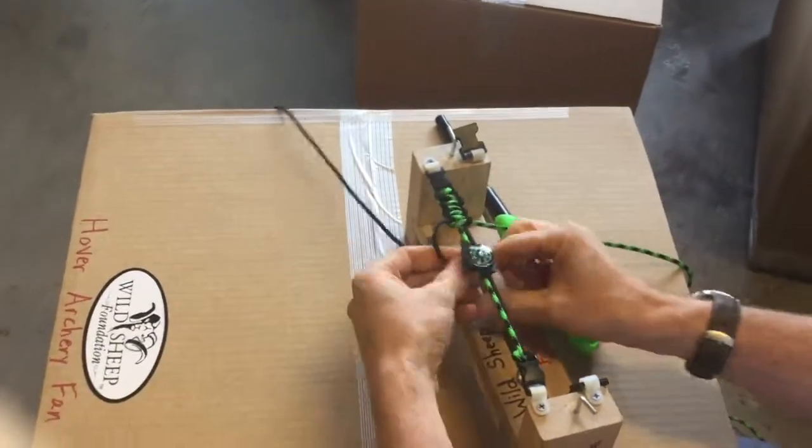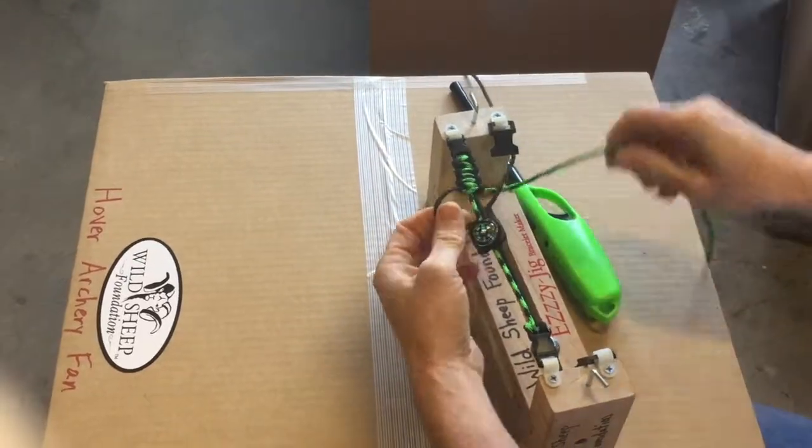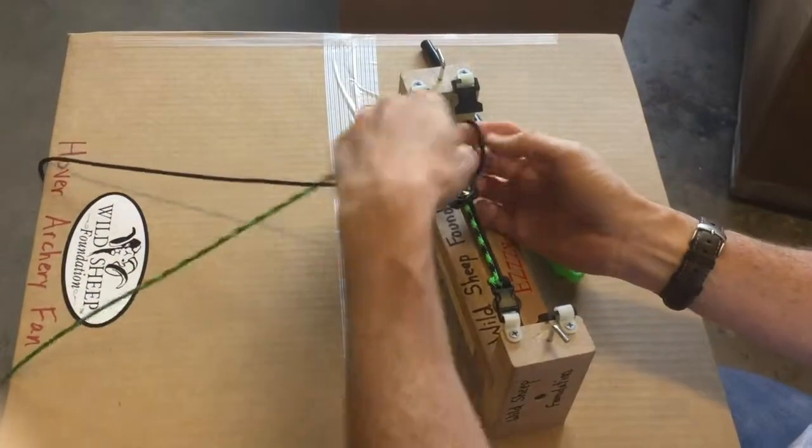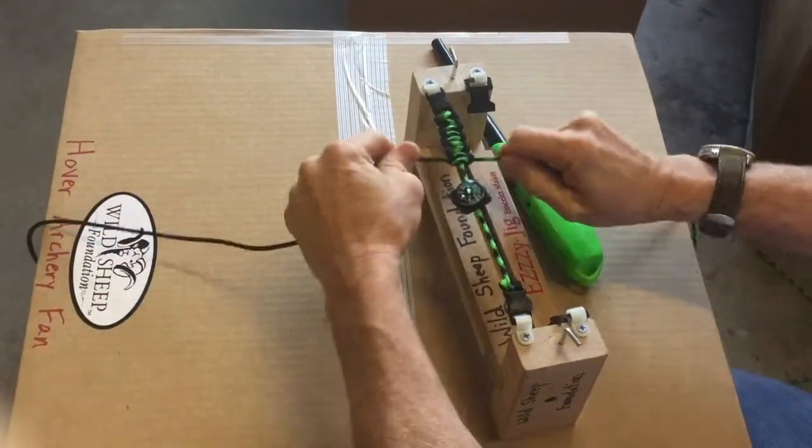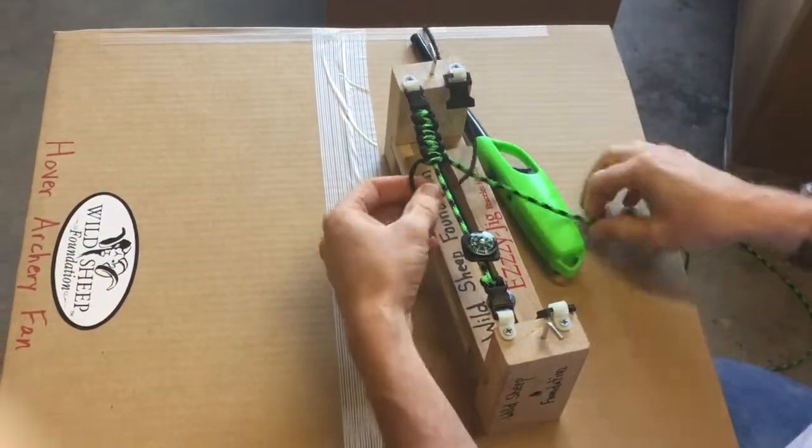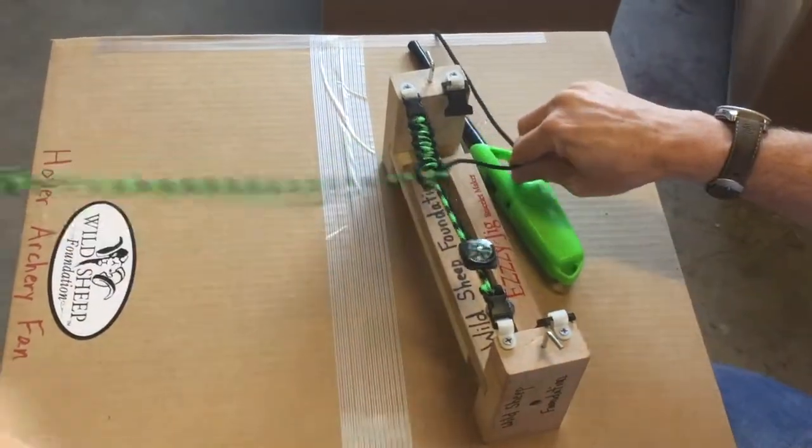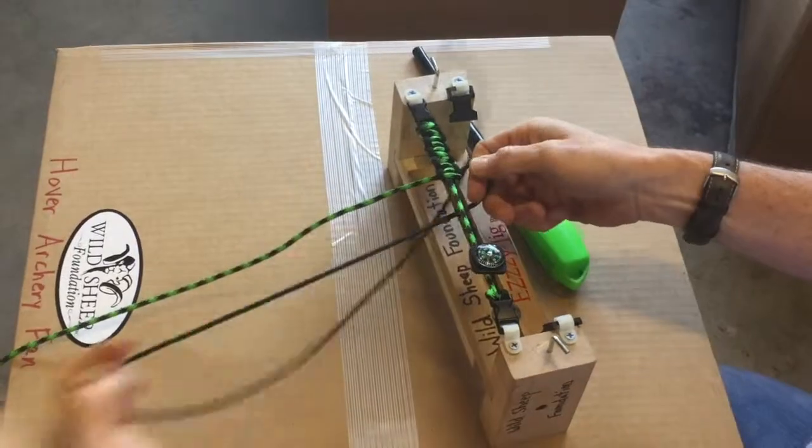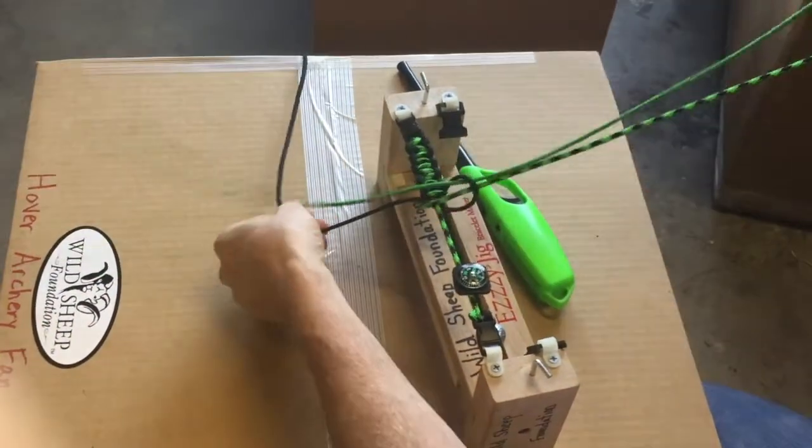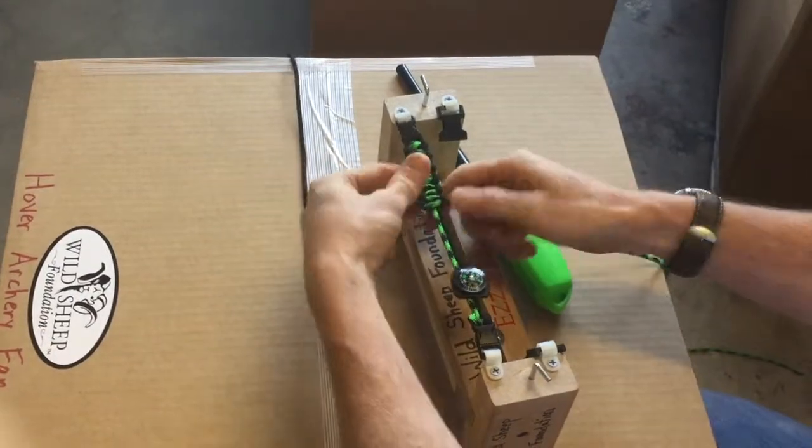And you do this until you basically get to either all the way across or until you get to about the center where that compass would be. And so if we look at there, I'll go a couple more. Black goes under. Flip it over. Green goes over and through the hole. Black goes under. Flip it over. Green over and through the hole. And it's just tying a bunch of knots, getting them nice and tight.